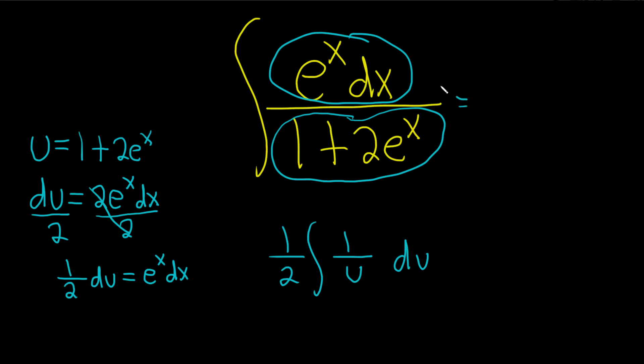Now, if you like, you can write it like this. e to the x dx is really maybe like this du one half. That might be a little more clear, you see, and then over u. Same thing as what I have written here. This is the formula.